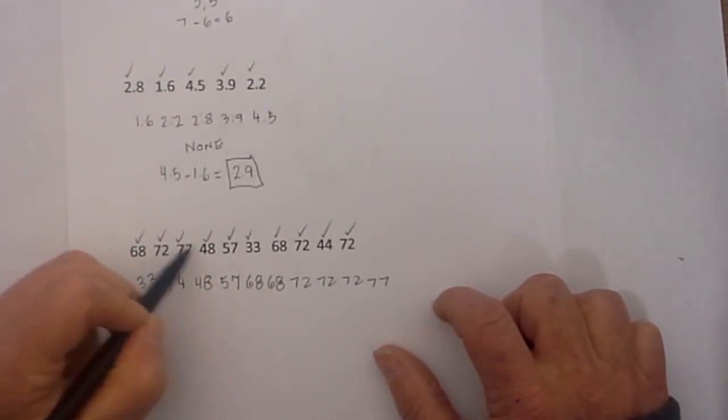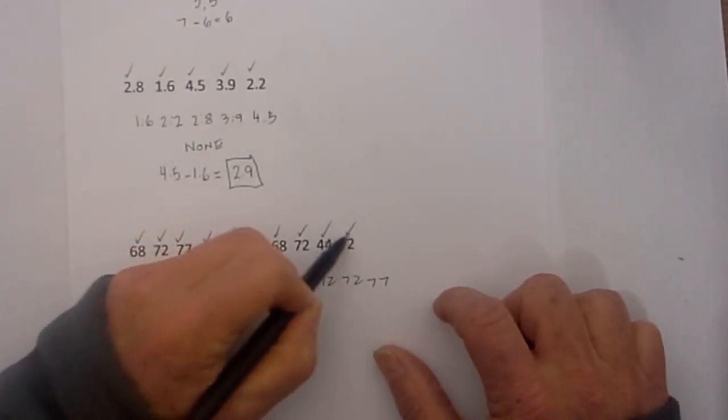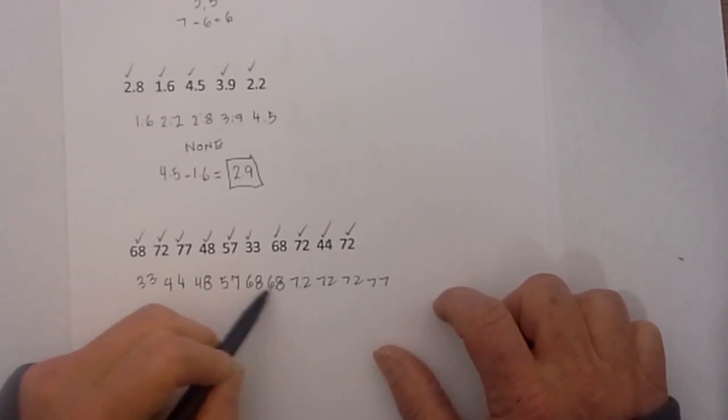So let's count, we have 1 2 3 4 5 6 7 8 9 10, 1 2 3 4 5 6 7 8 9 10, so we are good there.